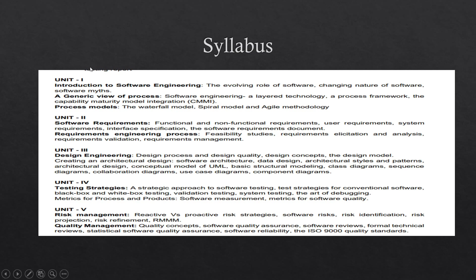Coming to Unit 1 — introduction to software engineering — this will be a simple topic covering a generic view of process and process models. Generally, what we observe in the question paper is the waterfall model, spiral model, and agile methodology, with one question compulsory. From CMMI and the process framework, you will get one question for sure. This is the overall exam pattern.